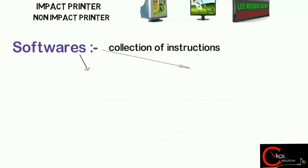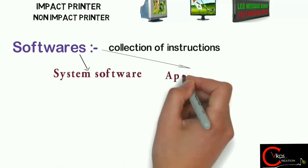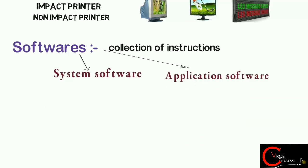The system software and the application software. The system software is a type of computer program that is designed to run a computer hardware and application programs. While application software is a program or group of programs designed for end users.